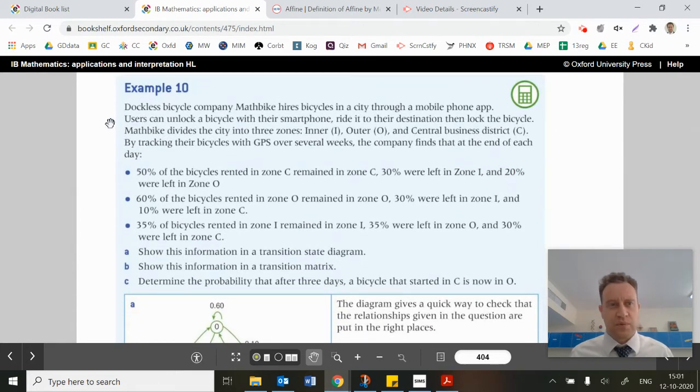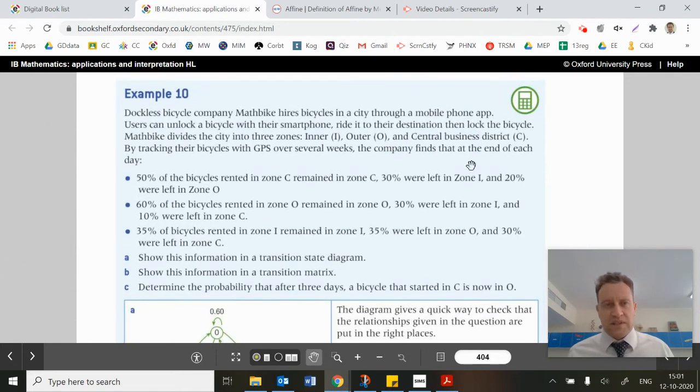So there's a pretty nice question here. I'm going to kind of take this from the question and then go backwards through a bit of theory here to talk about transition state diagrams and such. A pretty nice example. They talk about a dockless bicycle company, Mathbike, that hires bicycles in a city through a mobile phone app. Users can unlock a bicycle with their smartphone, ride it to their destination and then lock the bicycle. So there are three choices as to where you can start and where you can end. You can start in the inner zone, the outer zone, or the central business district. And of course, you can end up in those places too.